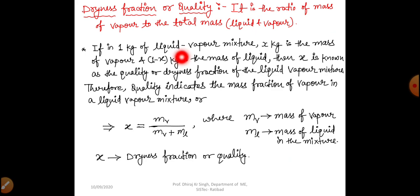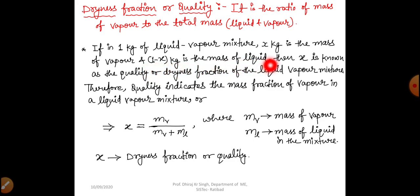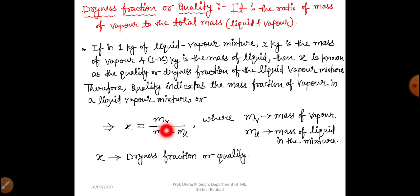Now we will move to dryness fraction. Dryness fraction is also known as quality. It is the ratio of mass of vapor to the total mass, that is liquid plus vapor. We find dryness fraction under the wet region where both liquid and vapor exist. If in 1 kilogram of a liquid-vapor mixture, x kilogram is the mass of vapor and (1 minus x) kilogram is the mass of liquid, then x is the quality or dryness fraction. So quality indicates the mass fraction of vapor in a liquid-vapor mixture. The formula is: x = m_v divided by (m_v plus m_l), where m_v is mass of vapor and m_l is mass of liquid.